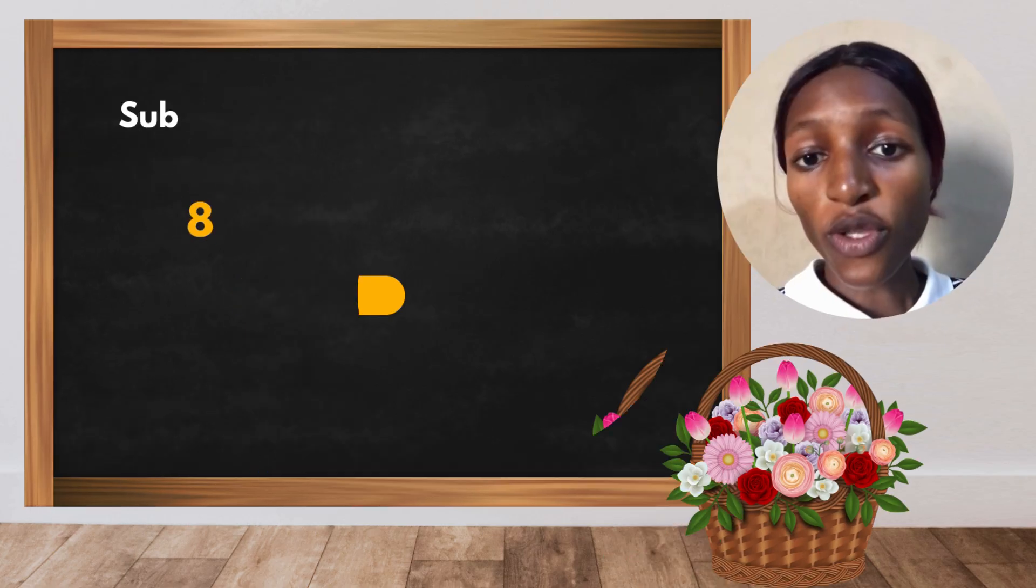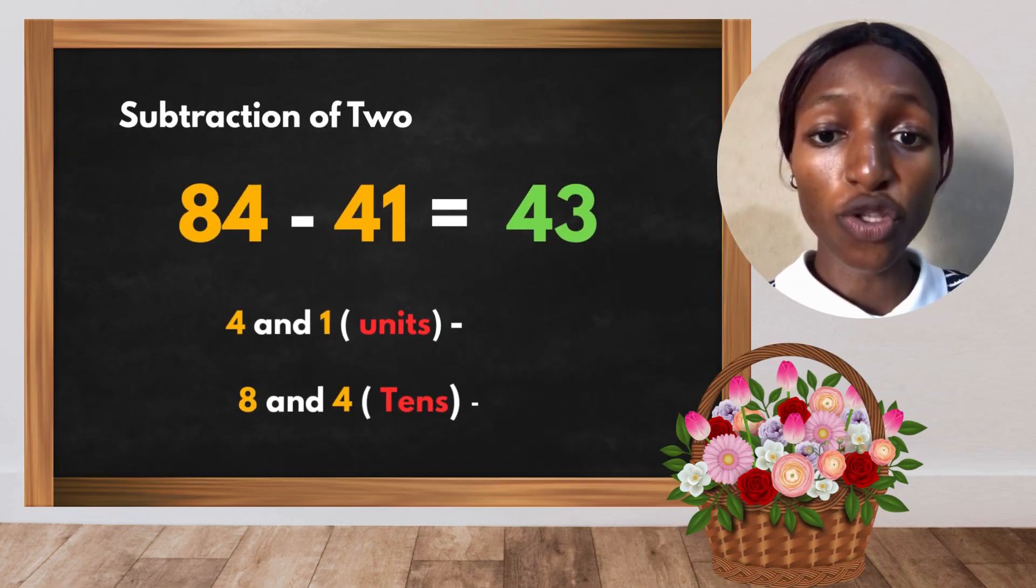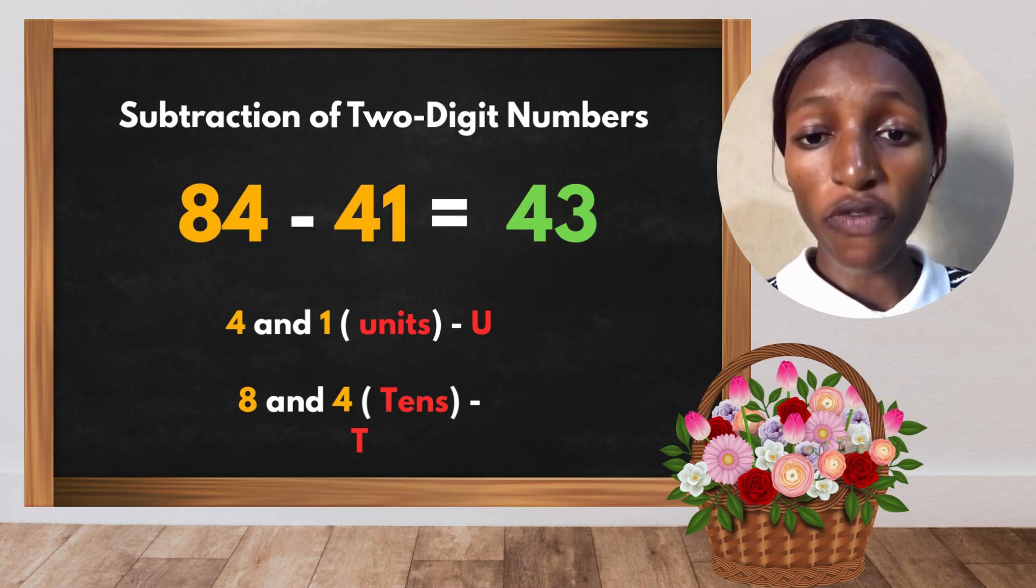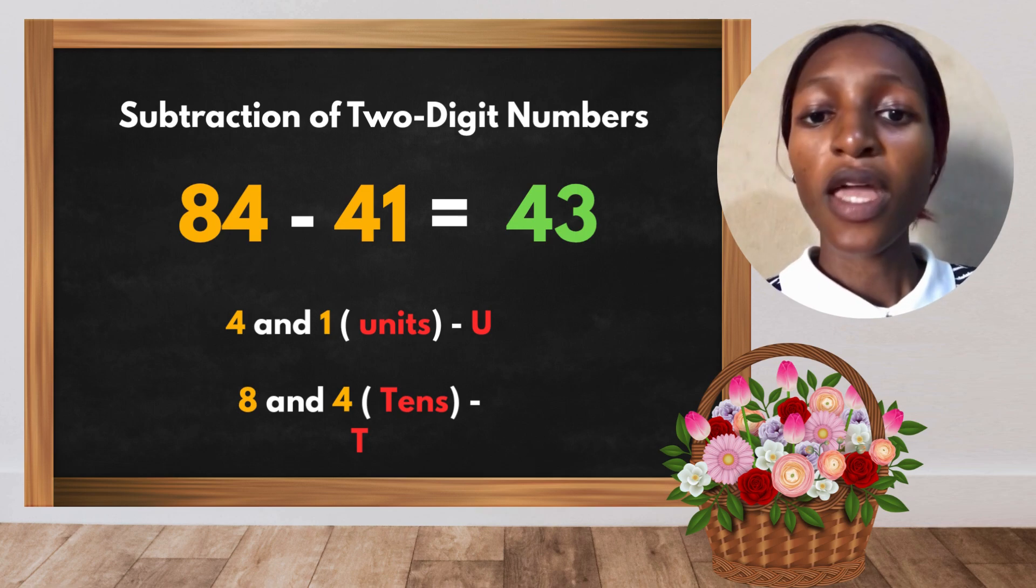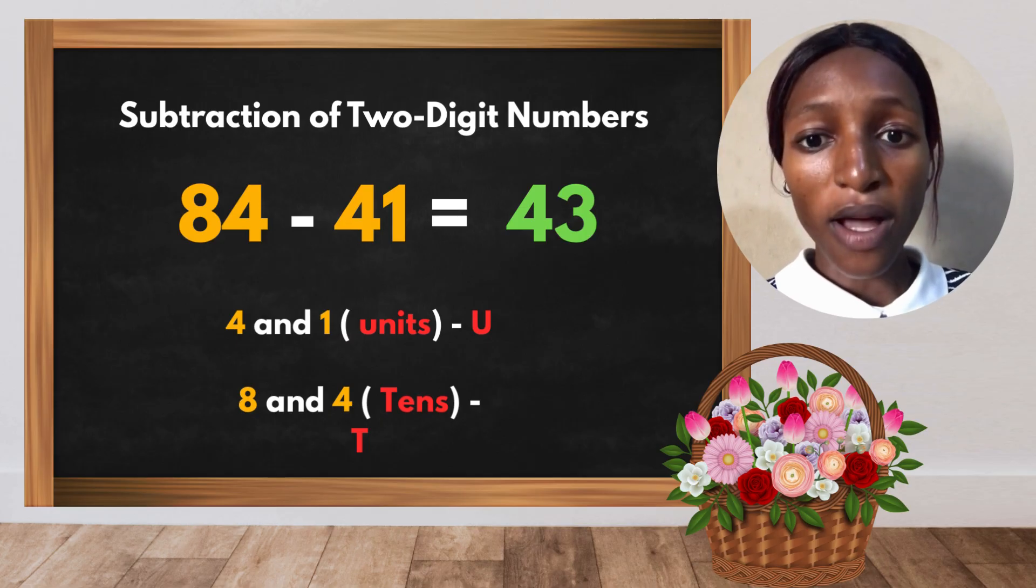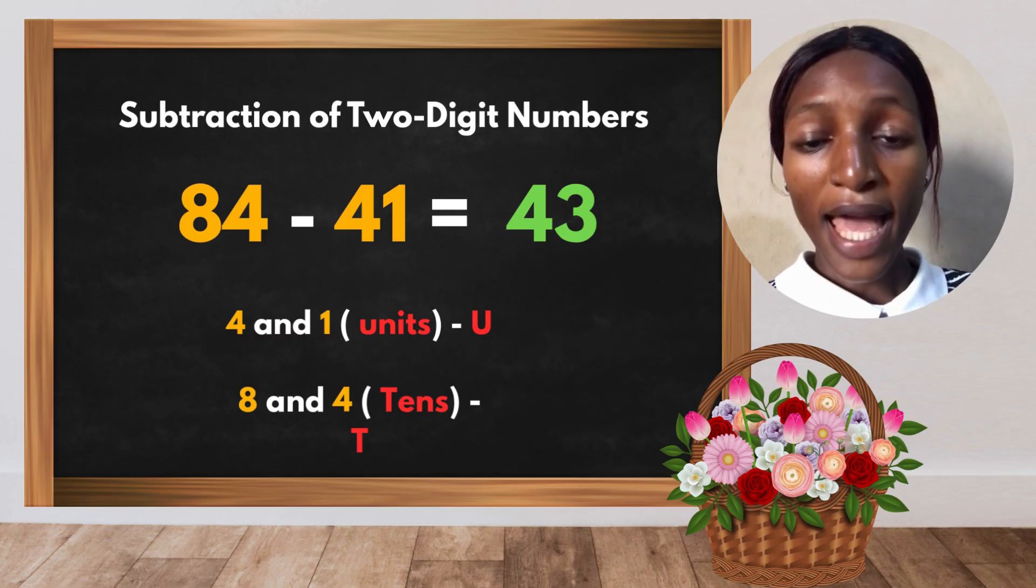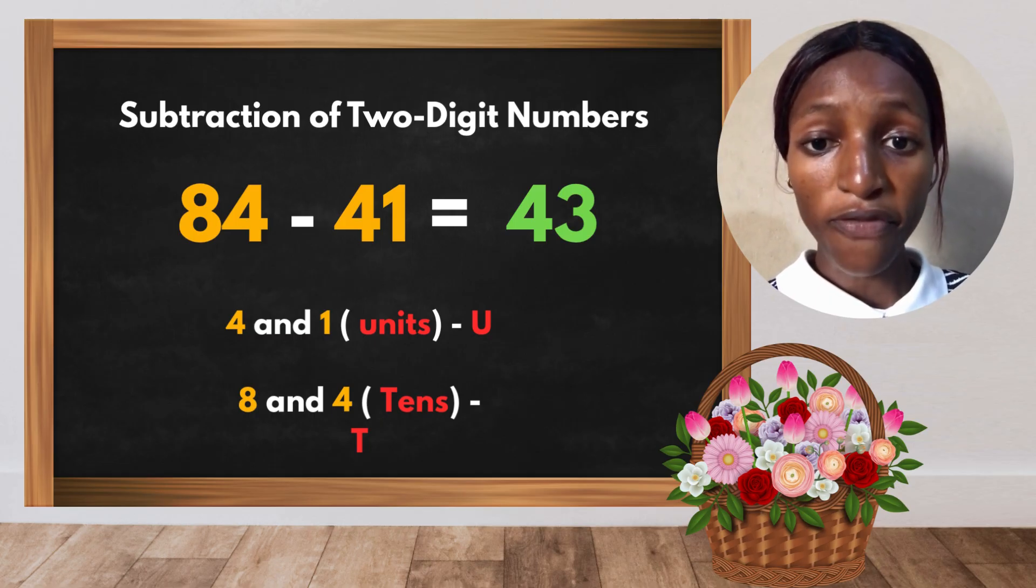So let's get started. We will start with the subtraction of two-digit numbers. 84 minus 41 gives you 43. Now I told you about arrangement: the 4 and the 1 are units, and 8 and 4 are tens. Arrangement is very important.